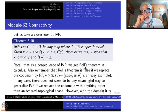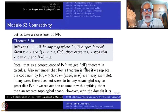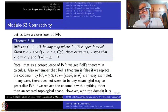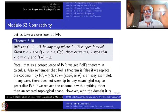In any case, there does not seem to be any meaningful way to generalize the Intermediate Value Theorem if you replace the codomain with anything other than some ordered topological space. Because you want to say 'intermediate value' — what is the meaning of an intermediate value? Given two values, what is the meaning of an intermediate value? That doesn't make sense unless there is an order. So you must take some order topology.